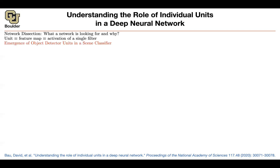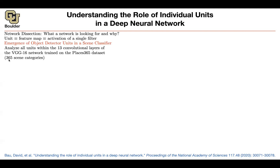It turns out that some of these units are going to correspond to object detectors — they're going to detect objects. Let's take a VGG16 network. Rather than training it on ImageNet, let's train it on Places 365 — a dataset of 365 scene categories. This has 365 classes at the end. We train it, and we know that VGG16 is going to have 13 convolutional layers. We're going to try to study every single unit per every single convolutional layer.